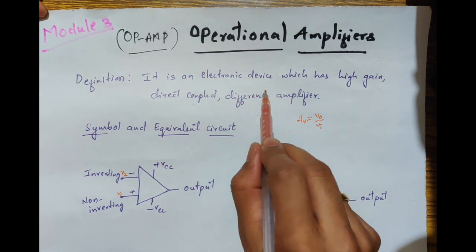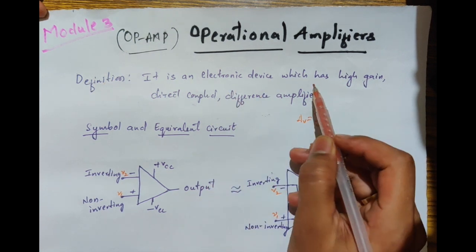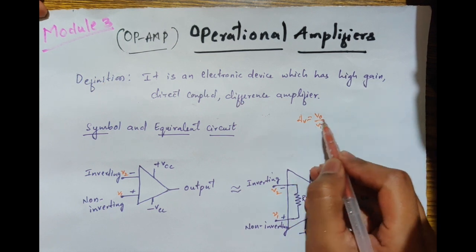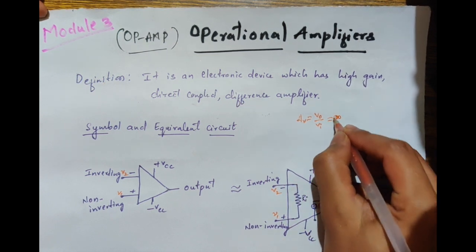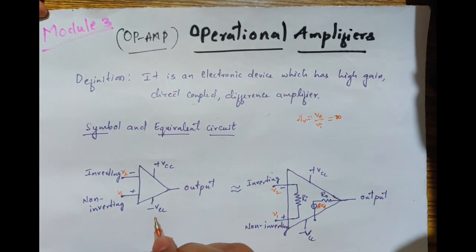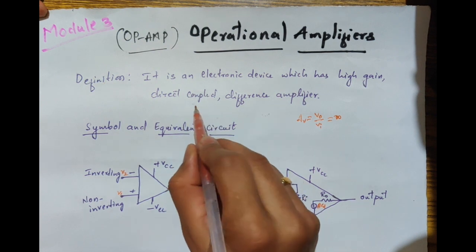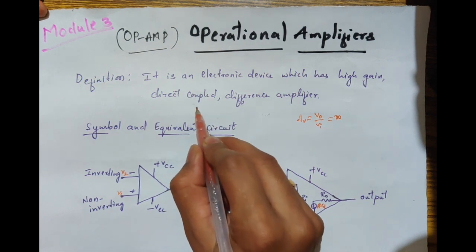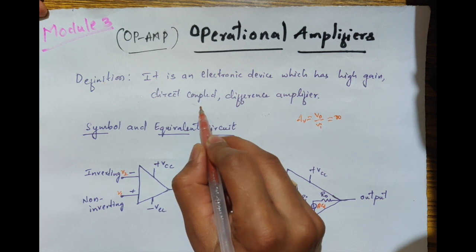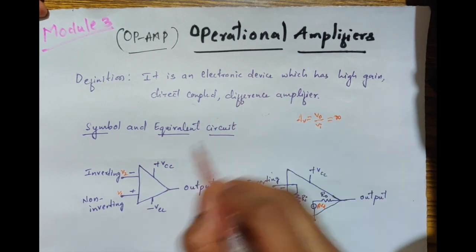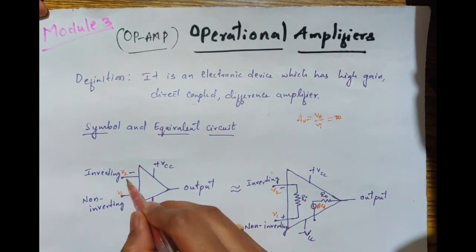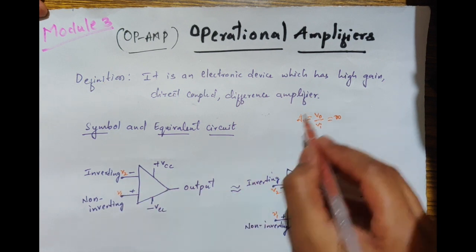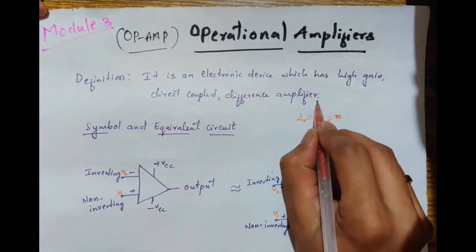So in summary, it is an electronic device which has high gain — where voltage gain is almost equal to infinity in the ideal case — direct coupled, meaning the op-amp can amplify zero frequency DC signals, and a difference amplifier, meaning it amplifies the difference of the two input terminal voltages. That is the definition of operational amplifier.